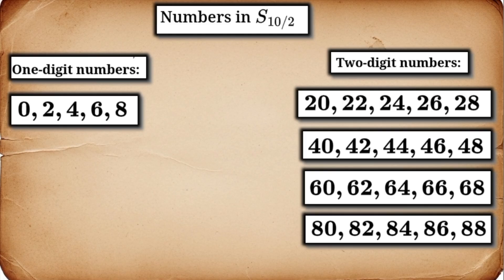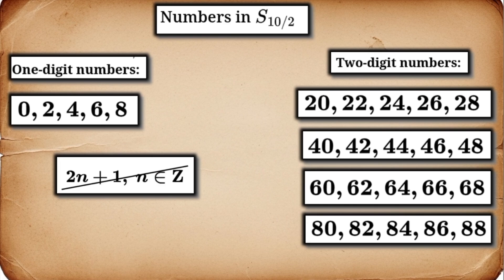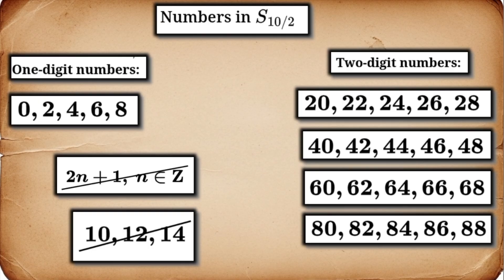Do you see what's happening? We have to skip over all the odd numbers. But more than that, we also skip numbers like 10, 12, 14. Why? Because 10 uses the digit 1, which is odd and forbidden. The number 12 uses 1, so it's out. To write 12 in the system, we can't. The smallest number we can write with a 2 in the tens place is 20. This set of numbers, which we'll call S10 over 2, is infinite but it's full of holes compared to the normal number line.